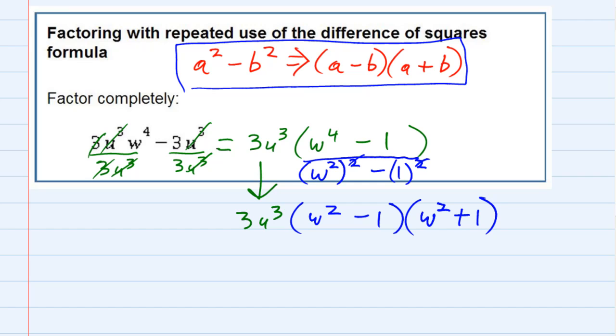Now, the instructions do say that it's repeated use of the difference of two squares, and that's because, in the middle here, we still have something that looks kind of like the difference of two squares. It is a w being squared, minus a 1 being squared, I could think of it that way.